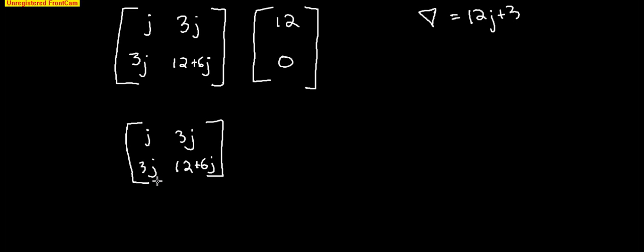So next, we substitute the left side with what our equation equals. So 12, 12 and 0. Now I find the determinant of this. So 12 times 12 plus 6j. This is 144 plus 72j minus nothing because we have a 0 over here. So del 1 equals 144 plus 72j.